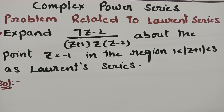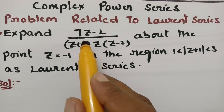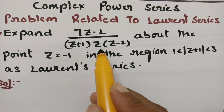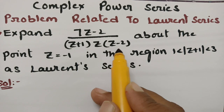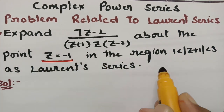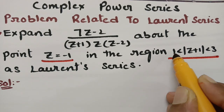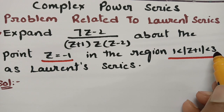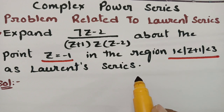Today's video is on the problem related to Laurent series. This topic is from complex power series. We have to expand (7z - 2) / [(z+1)(z)(z-2)] about the point z = -1 in the region 1 < |z+1| < 3 as a Laurent series.